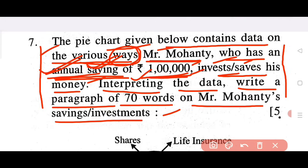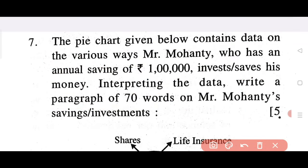You will write: 'The present pie chart contains the data on various ways Mr. Mohanty, who has an annual income of 1 lakh, invests and saves his money.' That is the first sentence.